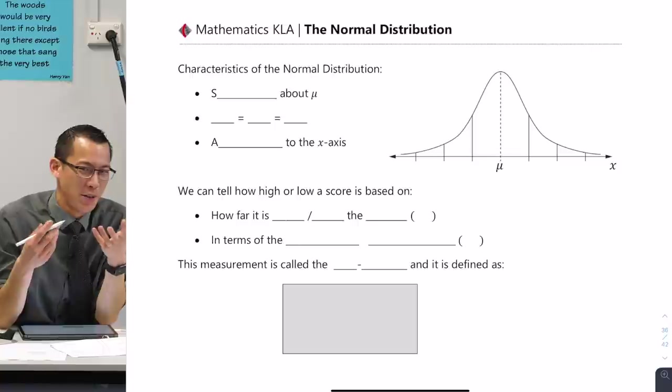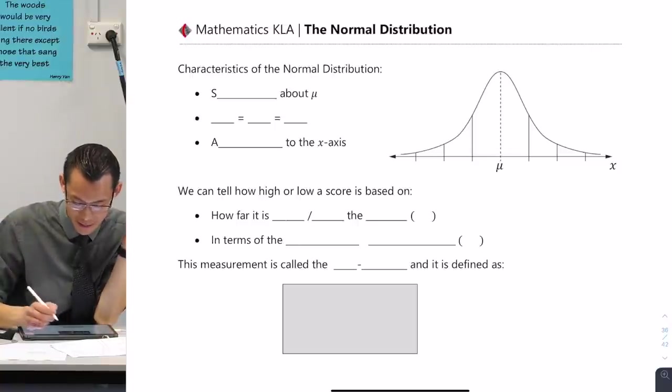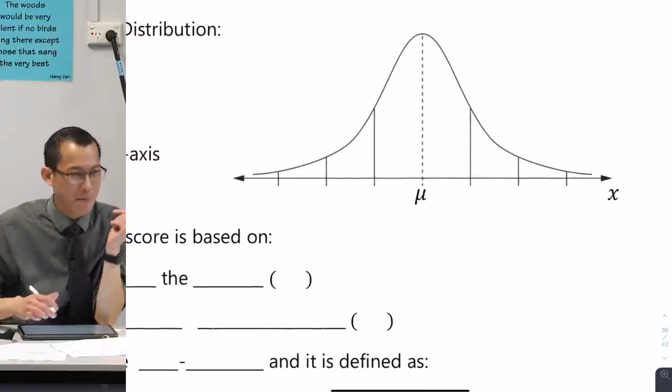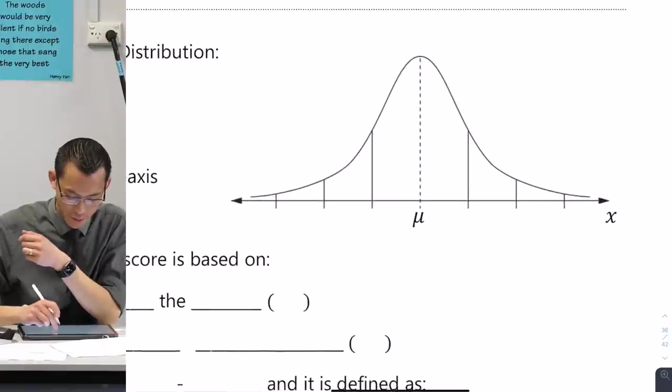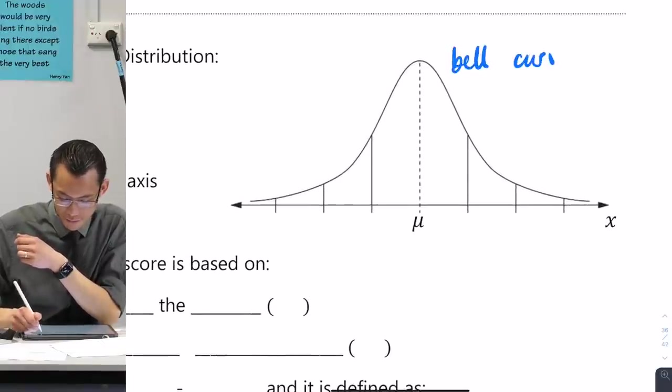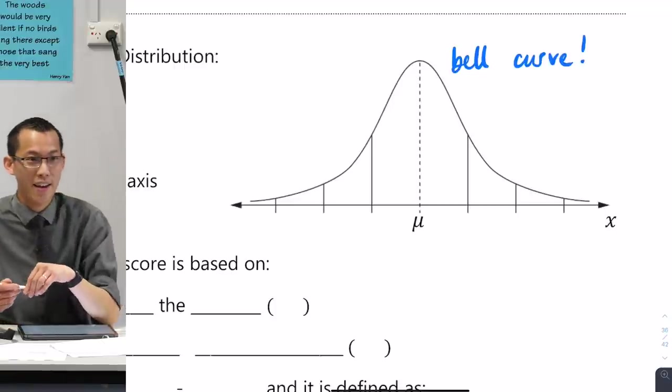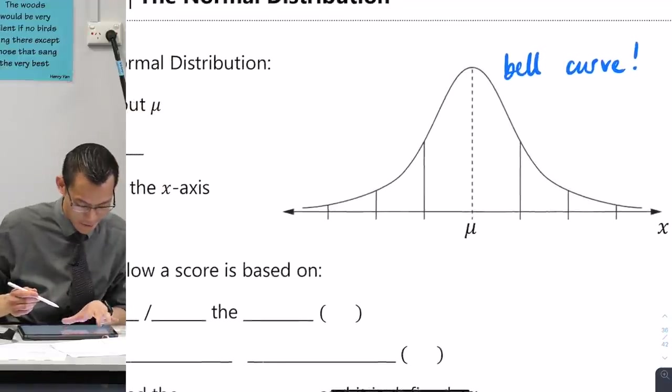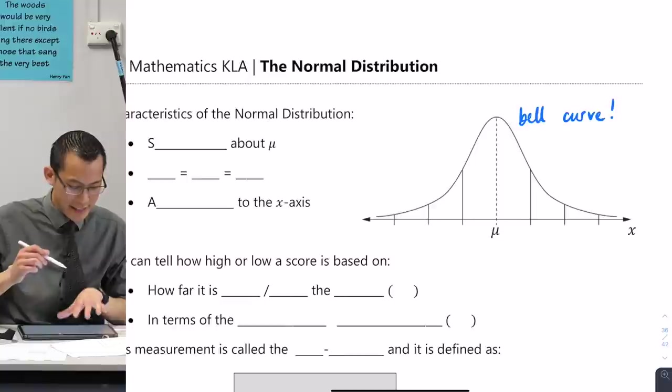Now you might sort of colloquially, and you're welcome to write this by the way, you might look at this shape and say, I know what this is. This is called the bell curve, right? The bell curve, because it looks like a bell. Maybe that's not where your brain goes.